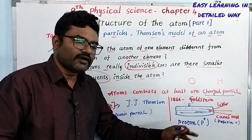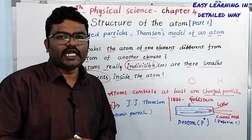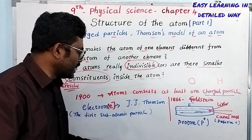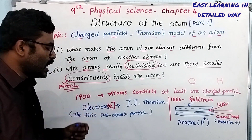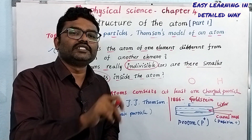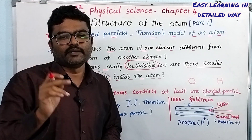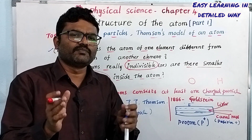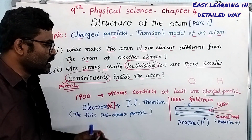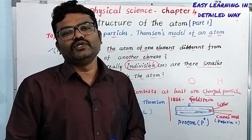The mass of a proton is 1 unit, while the mass of an electron is 1/2000th of that. So the mass of the electron is negligible compared to the mass of the proton.